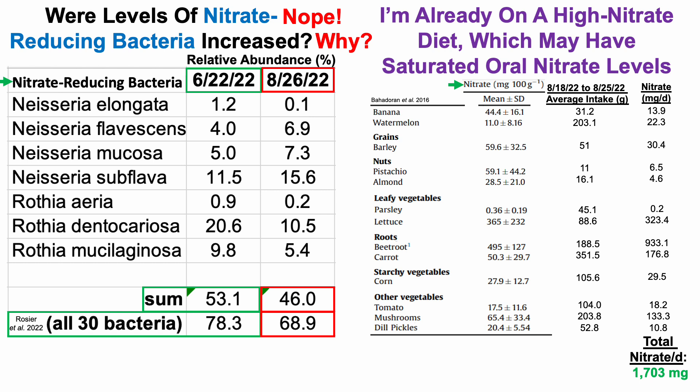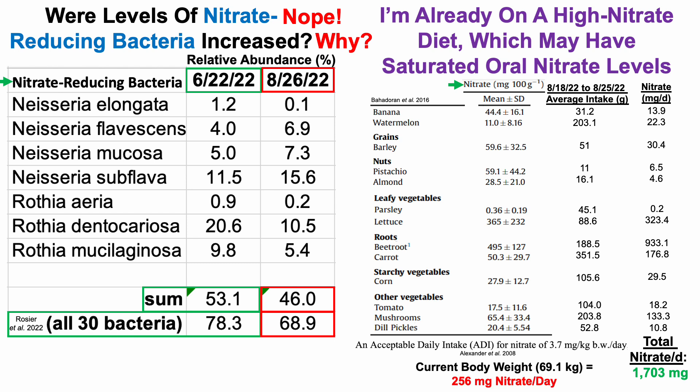To put that in context: the acceptable daily intake for nitrate is reported as 3.7 milligrams per kilogram of body weight per day. My current body weight is 69.1 kilograms (152 pounds), giving an acceptable daily intake of 256 milligrams per day. My current intake of 1,700 milligrams per day is six to seven times higher — which is why I'm already on a high nitrate diet that may have saturated oral nitrate levels.